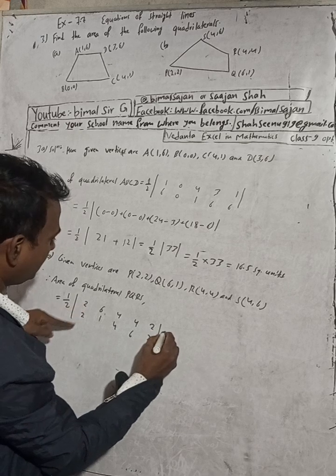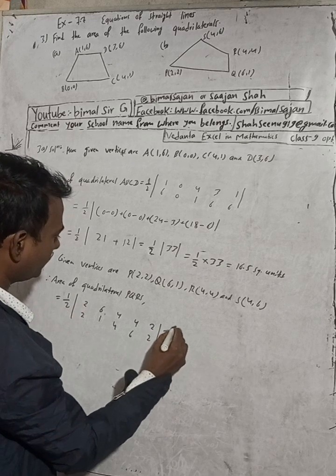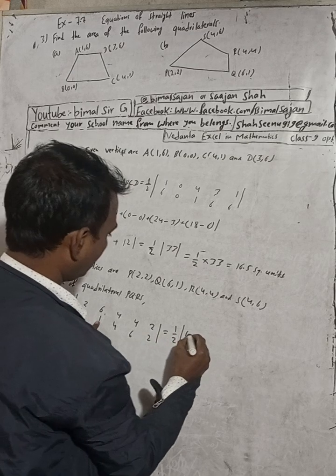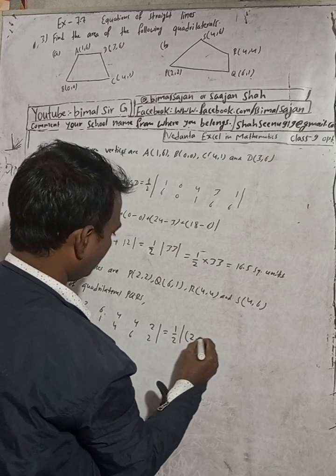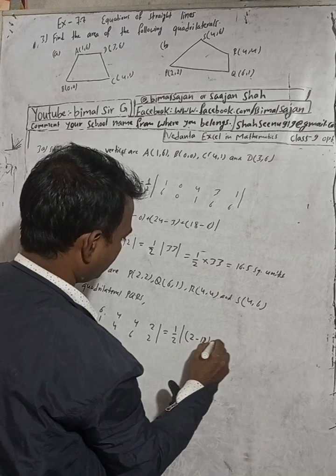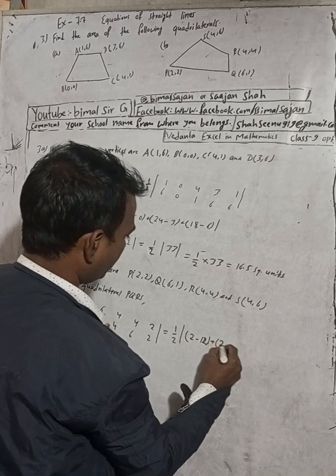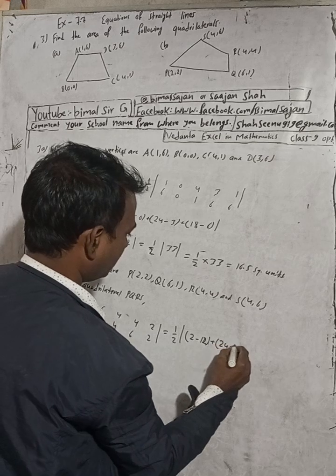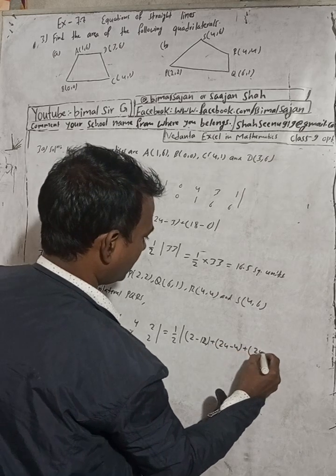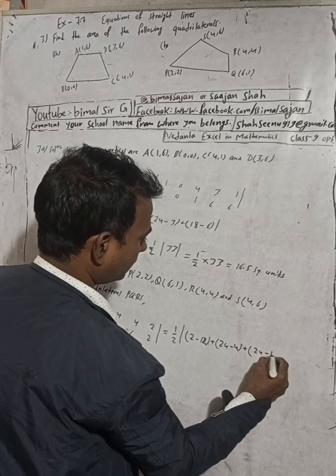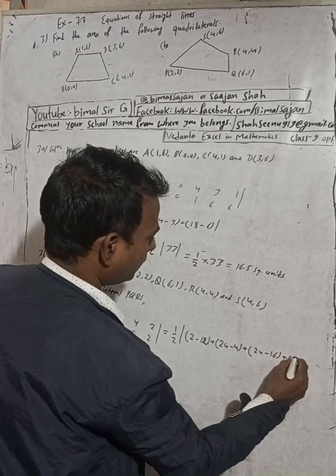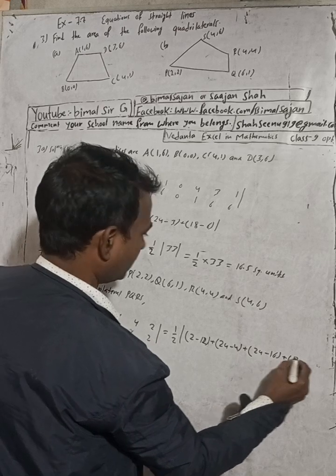This is equal to 1 by 2 modulus. 2*1 is 2 minus 6*1 is 6, so that's 12. Plus 6*4 is 24 minus 4*1 is 4. Plus 6*4 is 24 minus 4*6 is 16. Plus 4*2 is 8 minus 6*2 is 12.